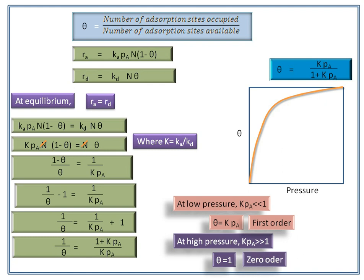According to Langmuir theory, only a single layer of molecules is adsorbed on the surface of the adsorbent. The fraction theta gives a measure of the amount of gas adsorbed per unit mass of the adsorbent. In the next videos, we will discuss questions from this chapter that are asked in the CSIR exam.